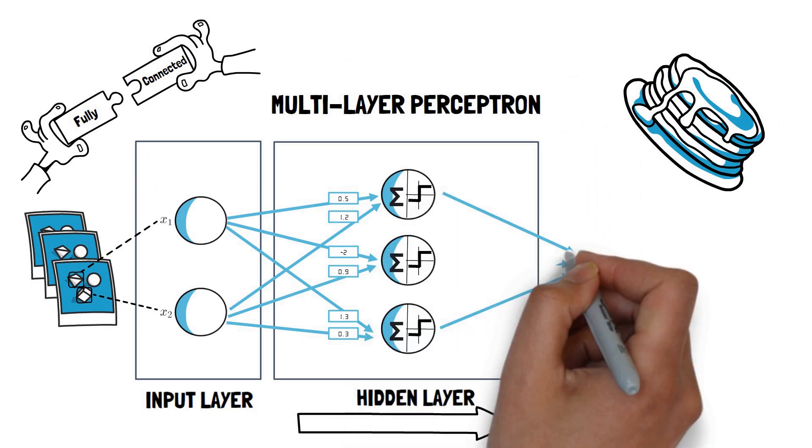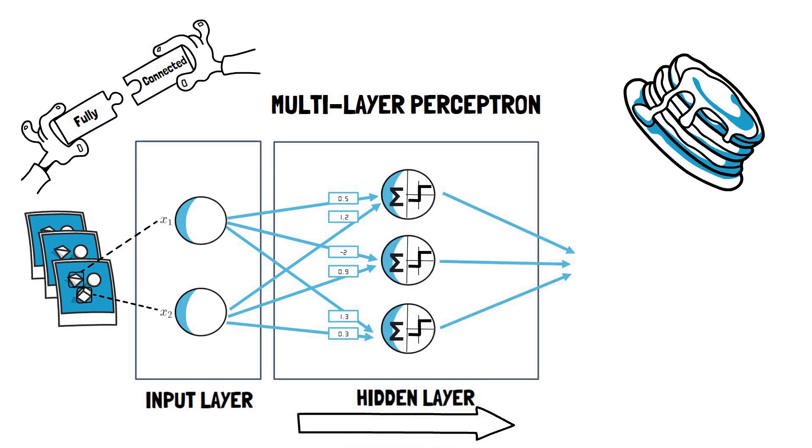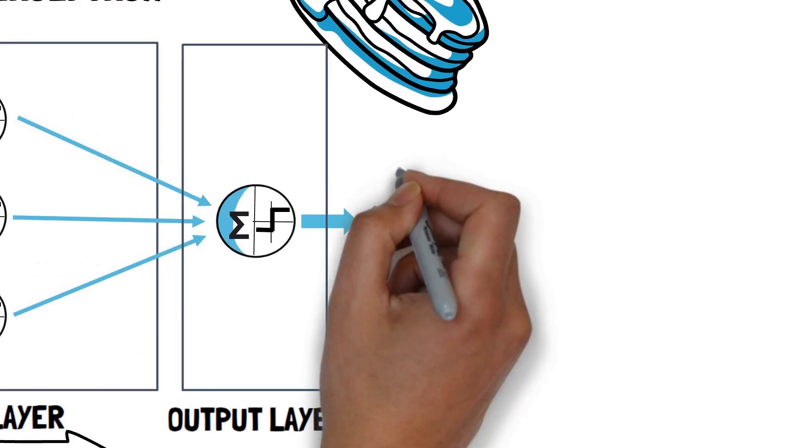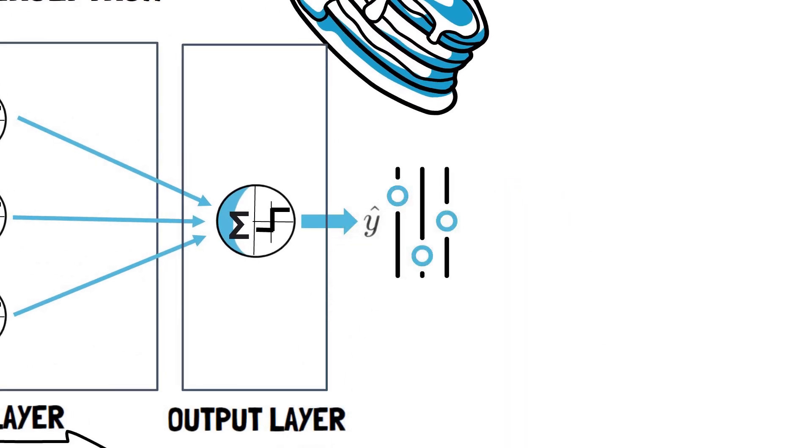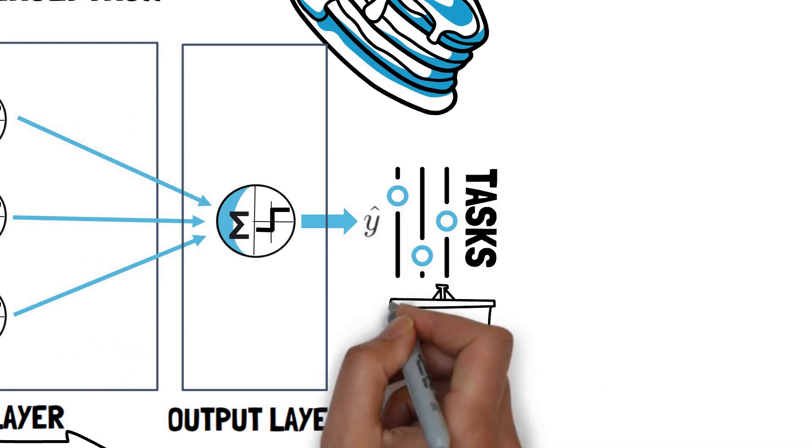Finally, the individual outputs of each perceptron in the hidden layer are fed into the perceptrons of the output layer. We'll see later how to set up this final layer for different tasks such as classification and regression.